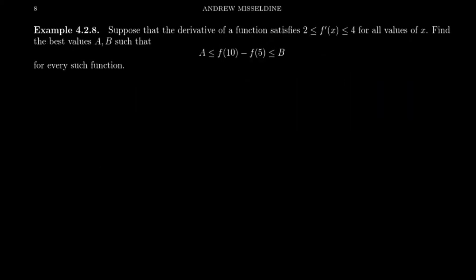Let's look at another situation where we can make some inferences using the mean value theorem. Suppose that the derivative of a function satisfies the condition where the derivative can never get smaller than 2, but never bigger than 4 for all values x. Let's find the best bounds for the numbers a and b. We're trying to bound the quantity f of 10 minus f of 5. How close together can f of 10 and f of 5 be? That gives us a. How far apart can they be? That gives us b.